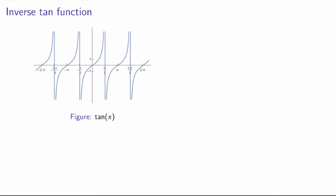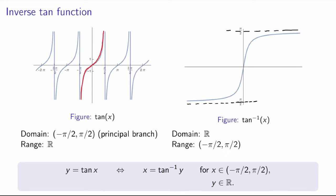We do the same thing for the tan function, which is also periodic, so not one-to-one. We need to define its principal branch. The convention is to choose the principal branch to be between minus pi over 2 and pi over 2. Note that we do not include the endpoints because the tan function has vertical asymptotes there. In this case the range of the tan function is all real numbers. The inverse tan function, obtained by reflecting about the y equals x axis, has domain all real numbers but range only between minus pi over 2 and pi over 2. One interesting thing to note is that the vertical asymptotes are mapped to horizontal asymptotes for the inverse function.